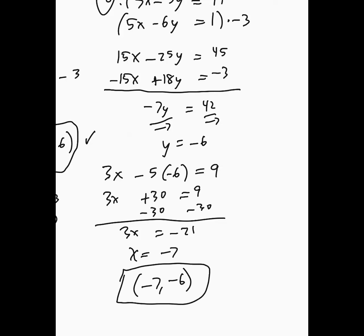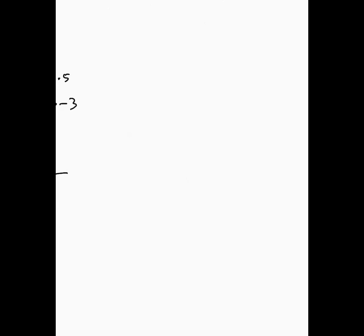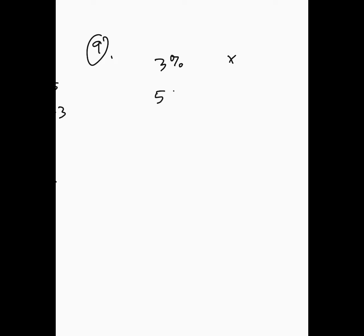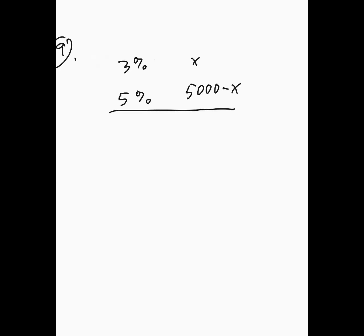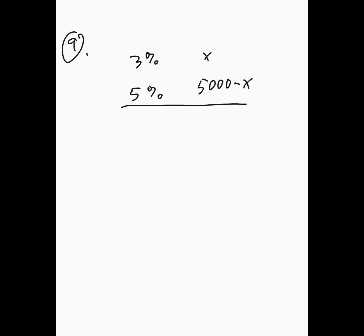Number 9 says you invested $5,000 between two accounts. Account one paid 3% interest and account two paid 5% interest. Since the total investment was $5,000, if x is in the first account, then 5,000 minus x is in the second. The total interest earned for the year was $190, so 0.03x plus 0.05 times (5,000 minus x) equals 190.